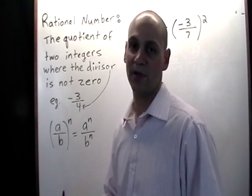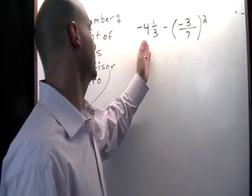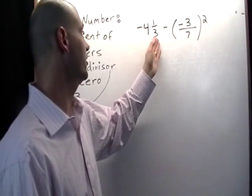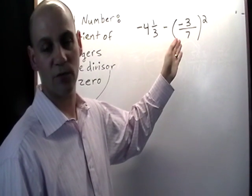So let's use this relationship to do a calculation such as this: negative 4 and a third subtract negative 3 over 7 squared.